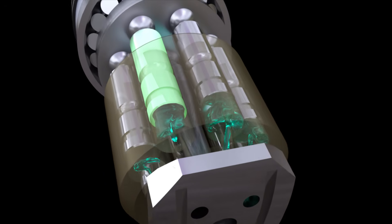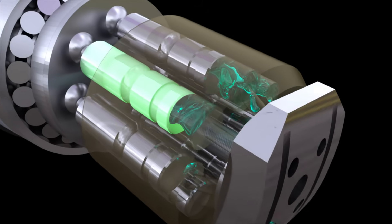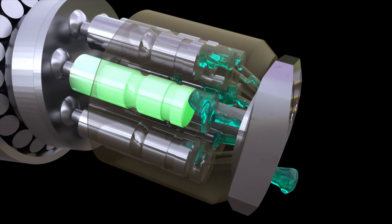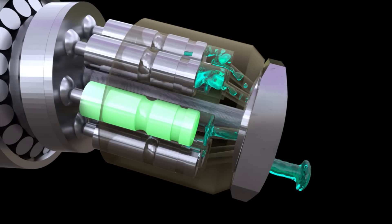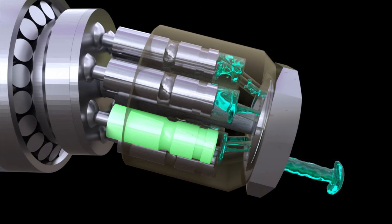Having reached the extreme position, the piston begins to move in the opposite direction, thus reducing the volume of the working chamber, and the fluid is displaced into the pressure channel.